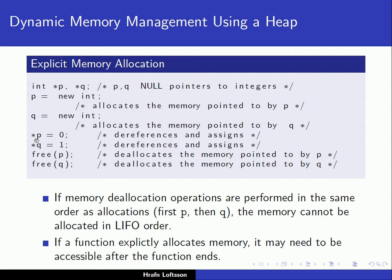Then we could do some dereferencing — star p equals zero — meaning the space that p points to now holds the value zero. And then finally we would do a delete if we're in C++ or free in the C language, deallocating the memory pointed to by p. Some languages like C and C++ allow the programmer to do explicit memory allocation and explicit deallocation as well.